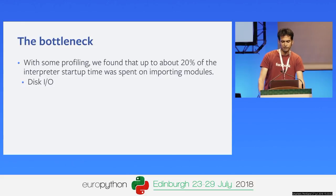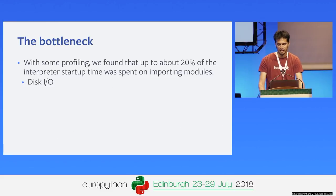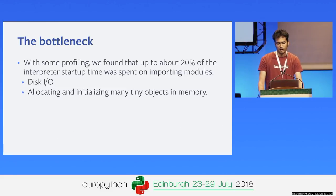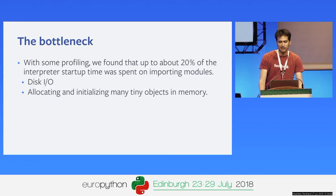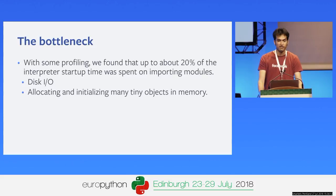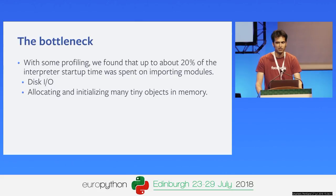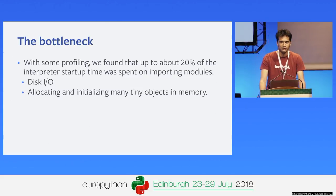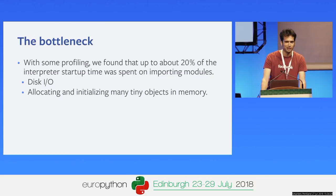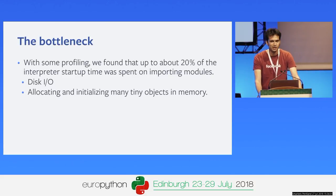Most of the startup time was spent on disk I/O — essentially just loading PYC files — and also on allocating lots of small objects. CPython has a lot of optimizations in place for making small object allocation really fast and cheap, but we won't settle for anything but completely free. I kind of love the phrase 'zero-cost abstractions,' which was popular among the C++ community and which the Rust community keeps talking about.